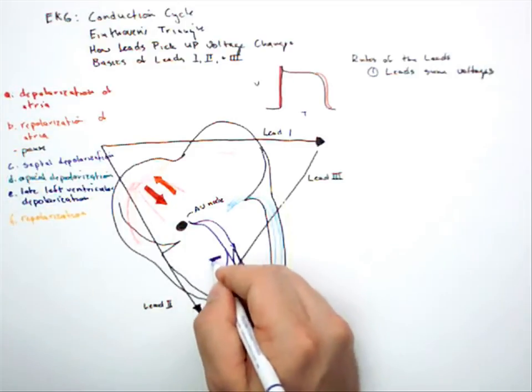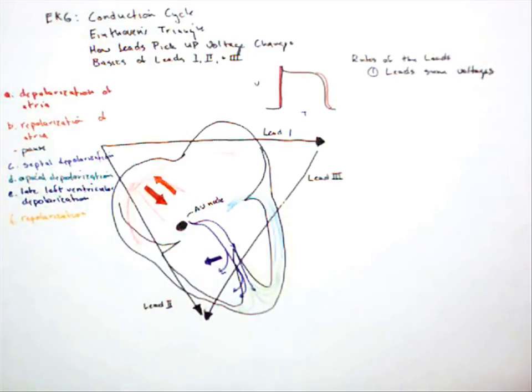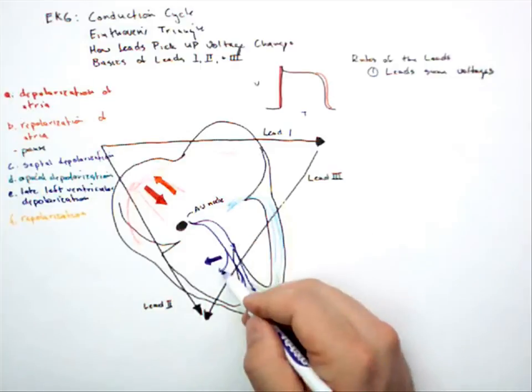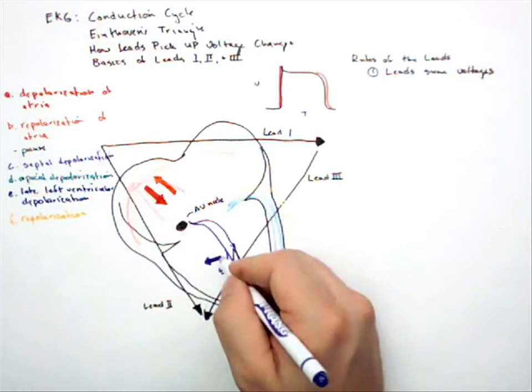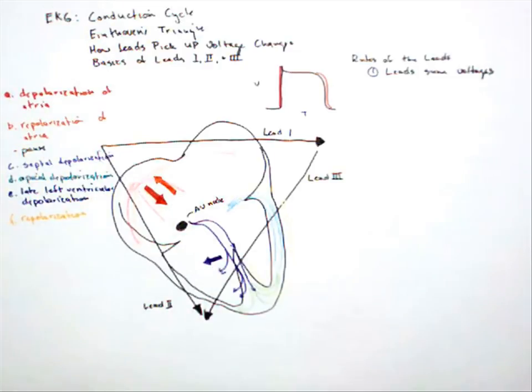It sums septal depolarization into one arrow. Let's put it up here. It's going to be a small arrow, because really you're only depolarizing the septum, which is not very big. And it's going to be dominated by this voltage spreading across the papillary muscles that are going to hold the tricuspid valve closed during contraction. So it's a very small arrow that's facing that direction.